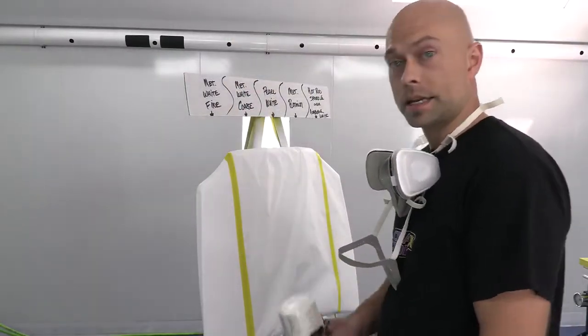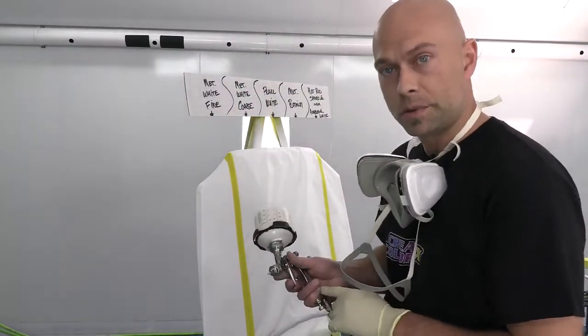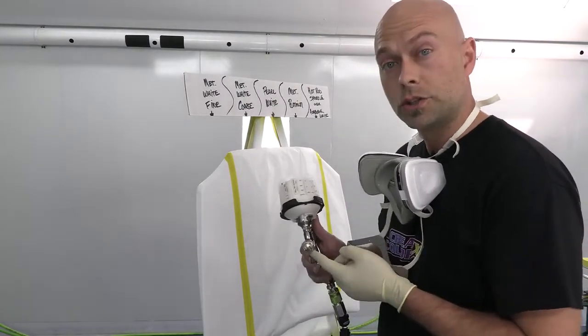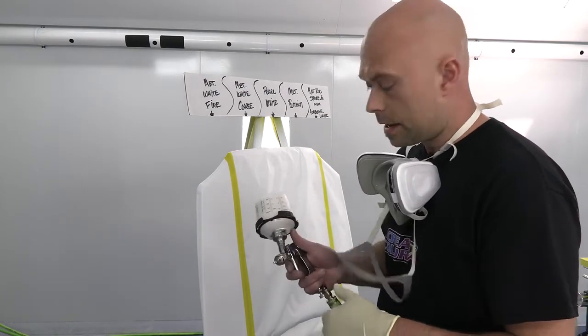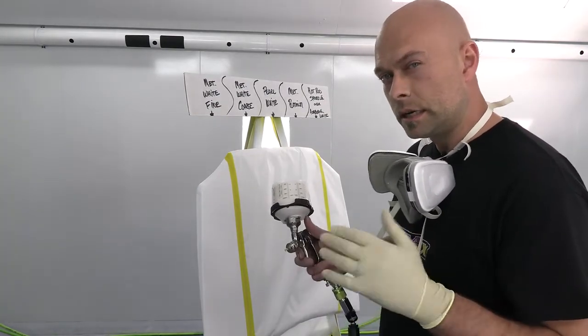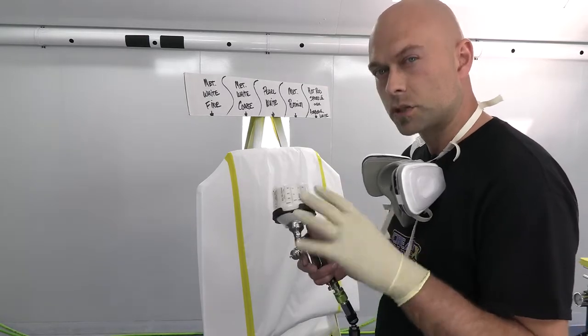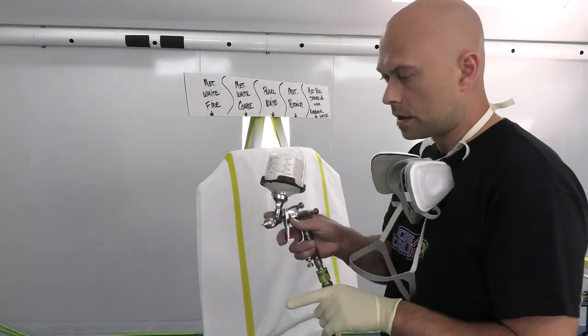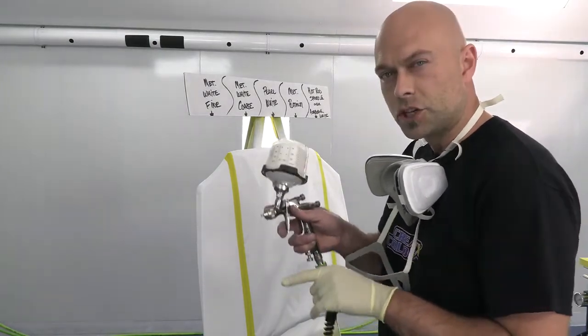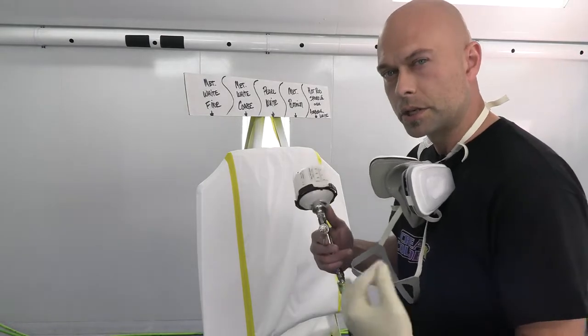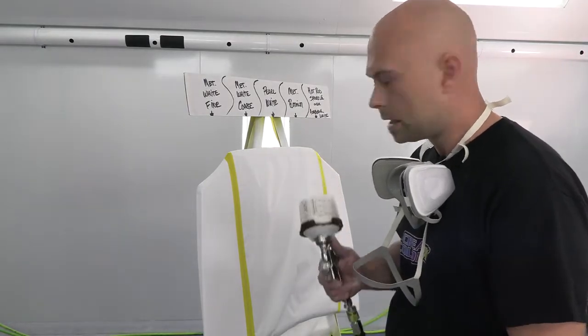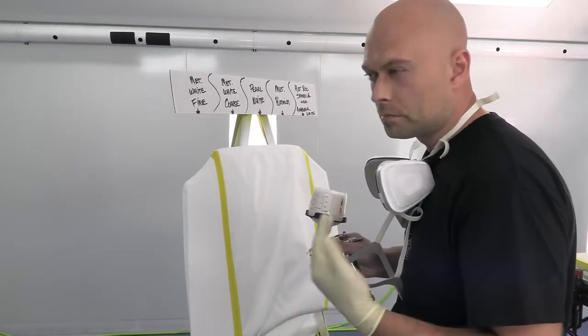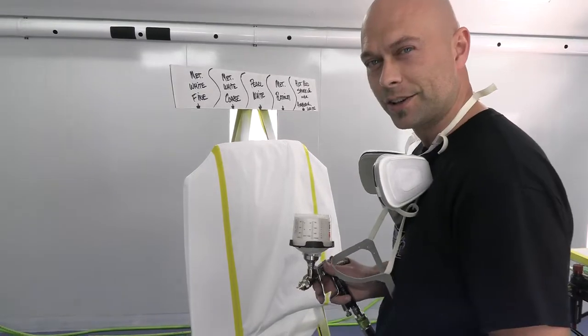I got my paint in my gun. This is an Iwata LPH-80. We had some questions on other videos about this. This is a 1-2 tip, the E4 air cap, and I'm spraying it right around 16 PSI into the gun. That's about the sweet spot for this gun for our paint. Anything higher sometimes tends to create a little funny-shaped fan. I'm going to be about 8 inches off the panel. I just want a nice medium coat of paint.